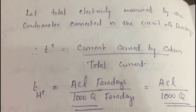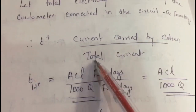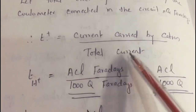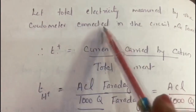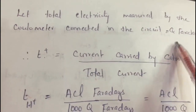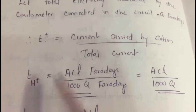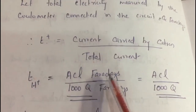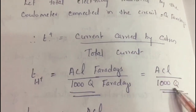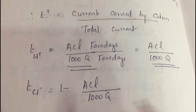The transport number is the fraction of current carried by each ion: T⁺ = current carried by cation / total current. The current carried by H⁺ is ACL/1000 Faradays. The total current is measured by the coulometer connected in the circuit — let it be Q Faradays. Therefore T(H⁺) = (ACL/1000) / Q. Since Faraday cancels, T(H⁺) = ACL / (1000Q). And T(Cl⁻) = 1 − T(H⁺), since T⁺ + T⁻ = 1.